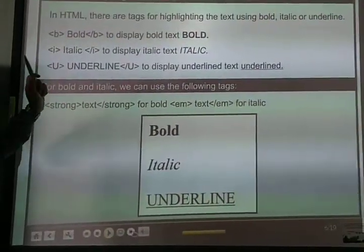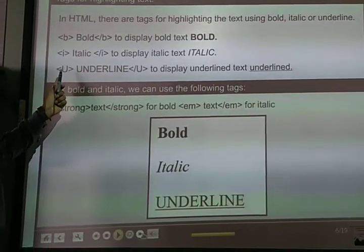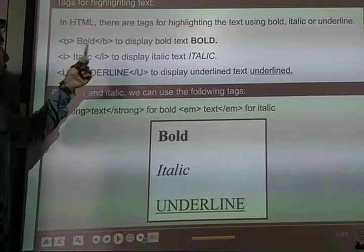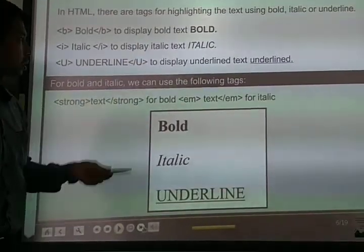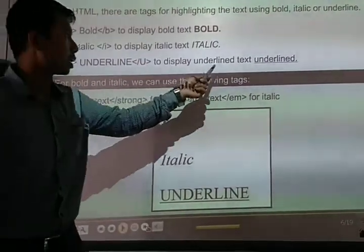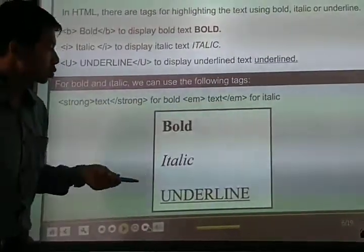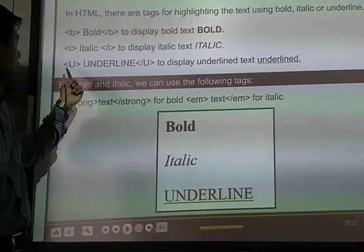For bold it's B, for italic it's I, and for underline it's U. B is used to display bold text, I is used to display italic text, and U is used to display the underline text. To give an underline, you can use the U tag.